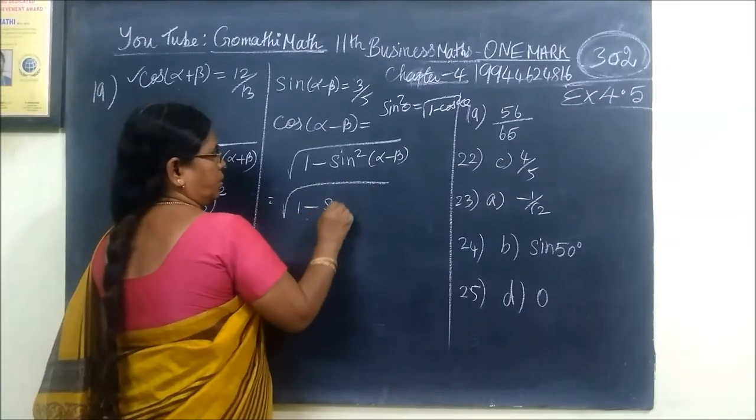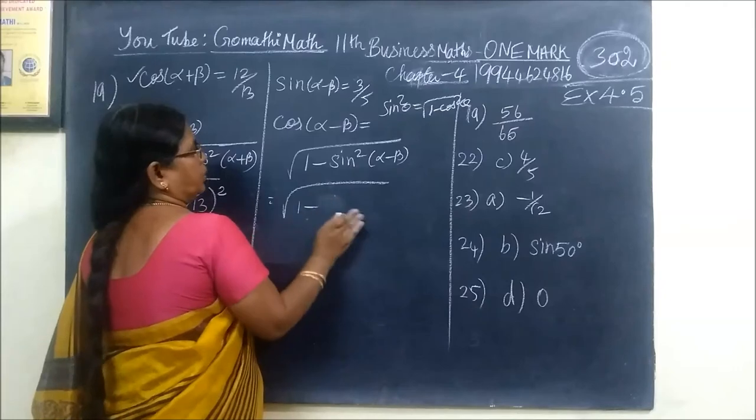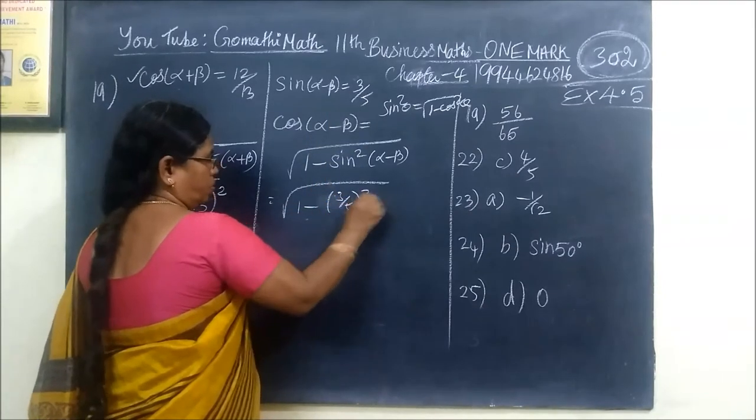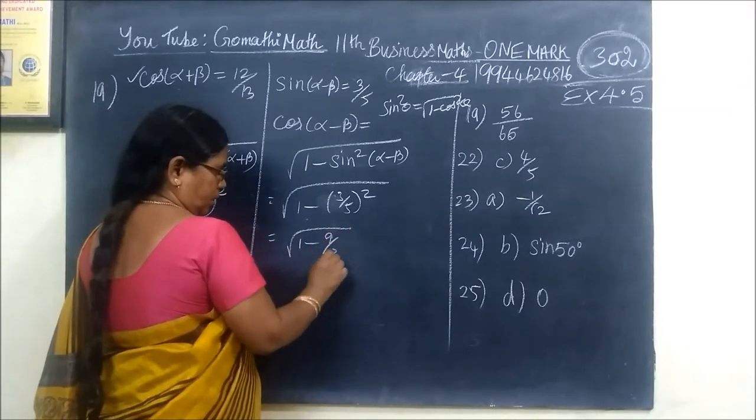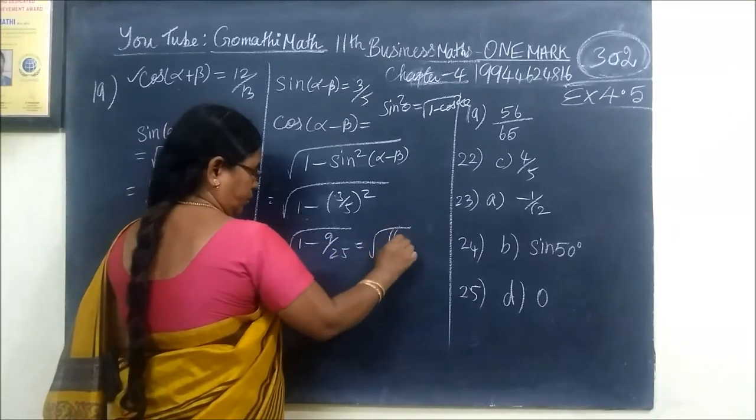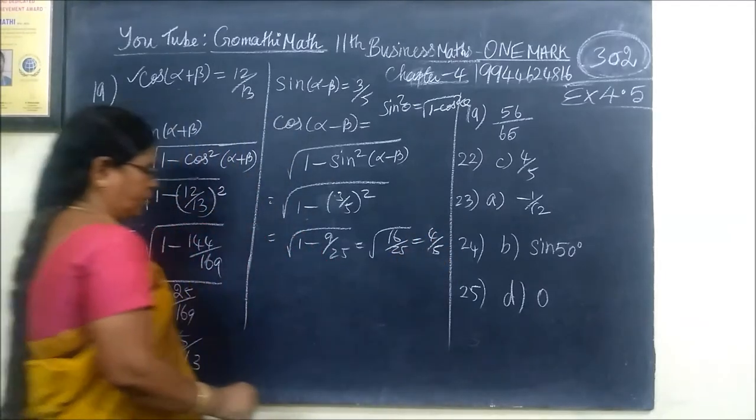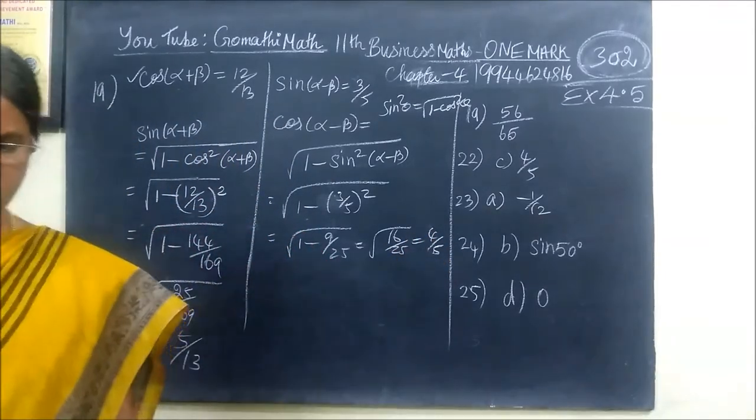So equal to 1 minus, this value is 3 by 5 and 4 square. Root of 1 minus 9 by 25, 16 by 25 equal to 4 by 5. So this value is used.